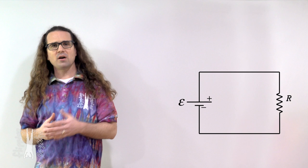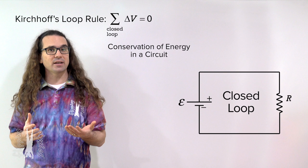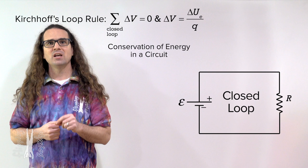Let's start with Kirchhoff's loop rule, which states that the net electric potential difference around a closed loop equals zero. The loop rule is essentially conservation of electric potential energy in a circuit. Because electric potential difference equals change in electric potential energy per unit charge, the net change in electric potential energy in a closed loop equals zero.